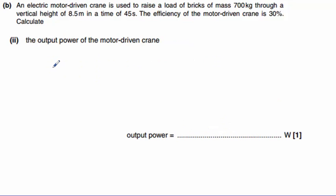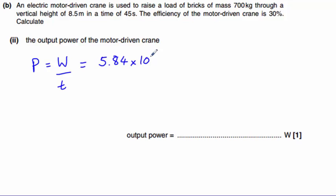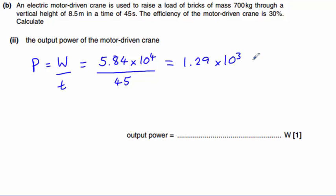Part II asks us to calculate the output power of this crane. We know that power is equal to work divided by time. The work done is equal to the gravitational potential energy the bricks gained, so our power equals 5.84 times 10 to the power of 4, divided by the time taken of 45 seconds, which gives us a power of 1.29 times 10 to the 3 watts.